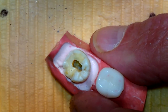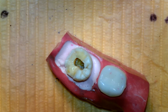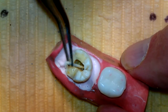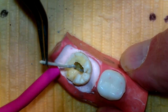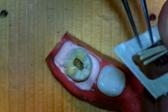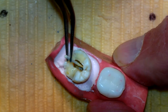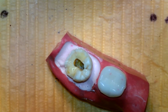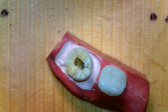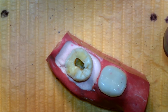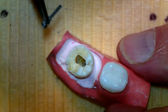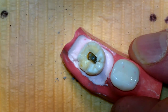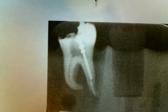Now, because we've had a rubber dam on, we're going to dry the canal and make sure there's no moisture to mess up the set and the bonding. Just like we did before, we're going to take a picture of the tooth with the post in to see how it sets up before we cement anything. Here's a picture of the post fitting in the tooth — this is a 4½ post and it went fairly easy without much work.